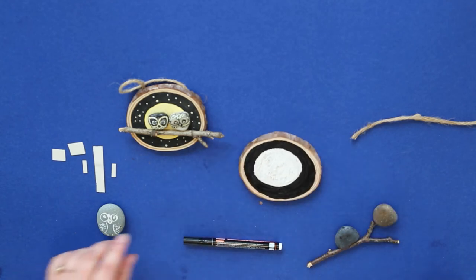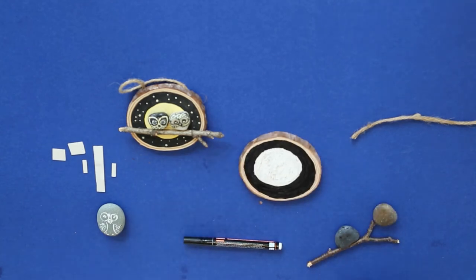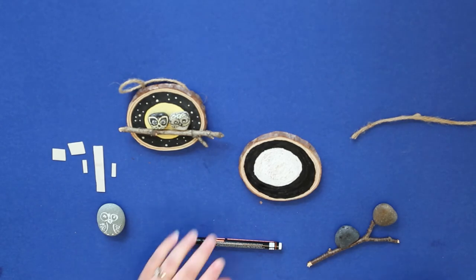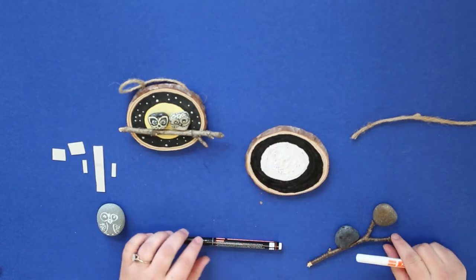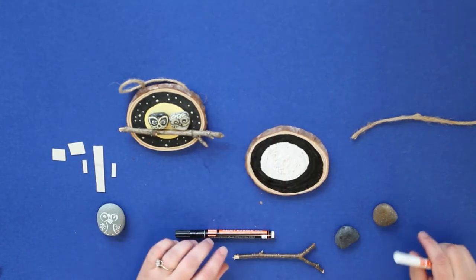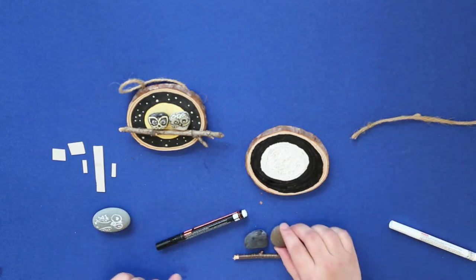Okay, so I have my first coat of paint on the wood slice and while that dries a little bit more I am going to do the painted owl rock and as you can see I have a couple of different samples here.